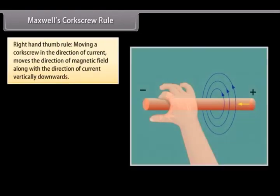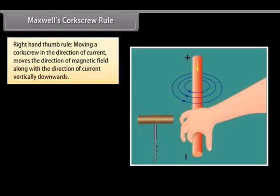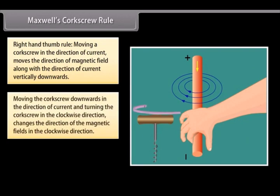Maxwell's Corkscrew Rule, also known as Right-Hand Thumb Rule, defines that moving a corkscrew in the direction of current moves the direction of magnetic field along with the direction of current vertically downwards. If we move the corkscrew downwards in the direction of current and the handle of corkscrew is turned in the clockwise direction, then the direction of the magnetic fields is in the clockwise direction.